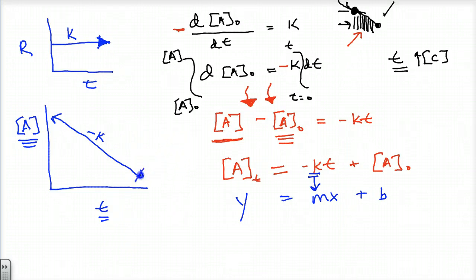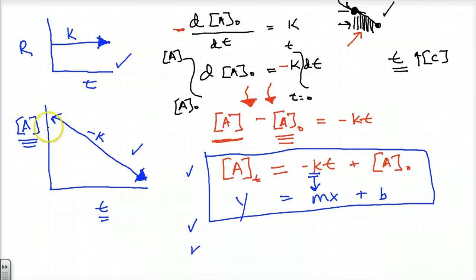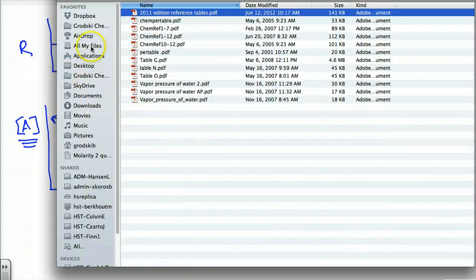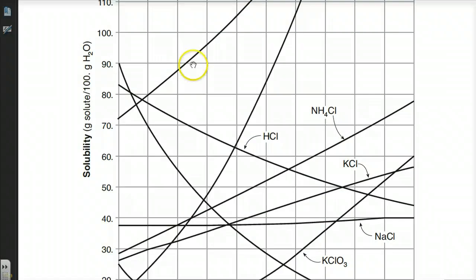I'll have two more lectures defining first and second order. These equations are important — if you look in your reference table, you won't have the zero-order one, but you'll have the ones I'll derive in the second and third video. After those lectures, you'll be able to take graphs and identify through experimental evidence whether it's first or second order. Let me give you a peek at the reference table right now.